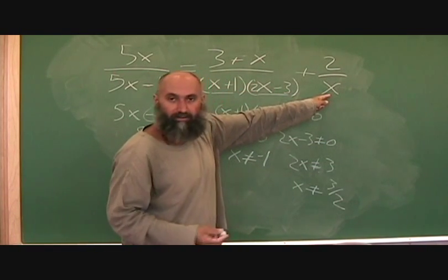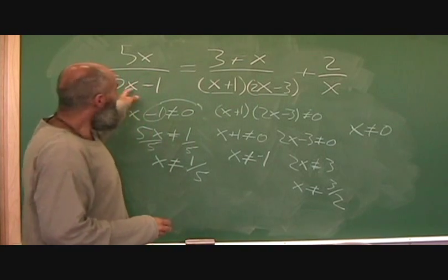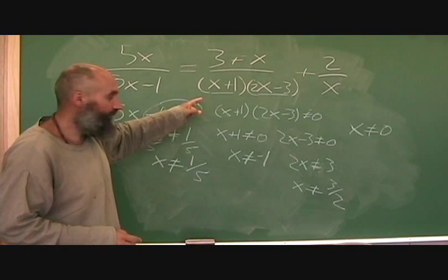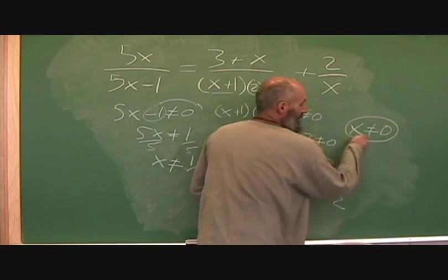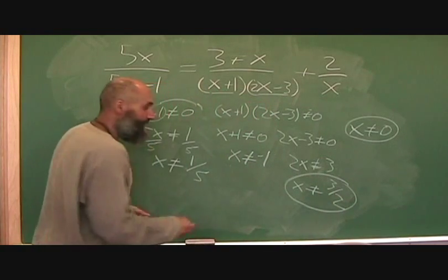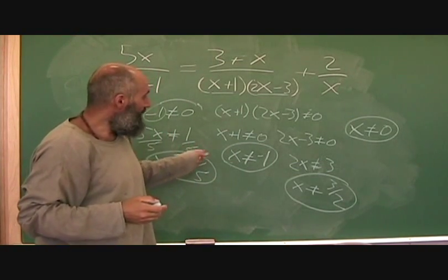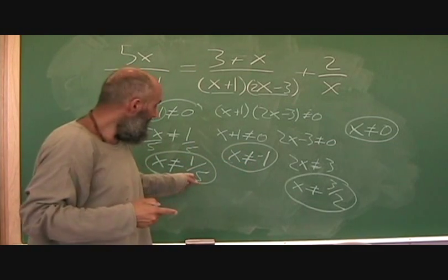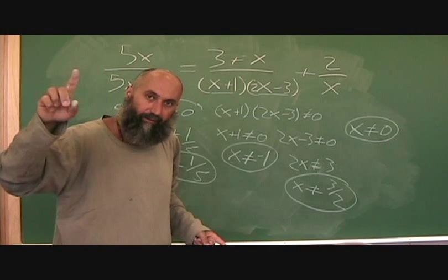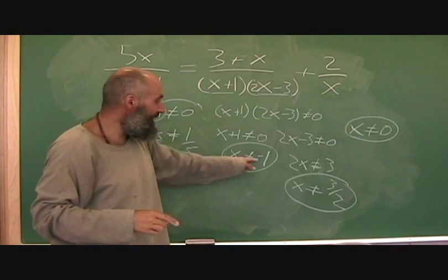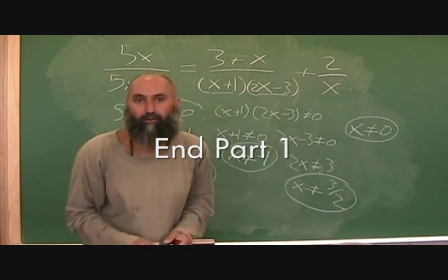And over here it's just straightforward: x cannot equal zero. So before you even start solving this equation, write down all the restrictions on the right-hand side. All your restrictions are: x cannot equal zero, x cannot equal 3 over 2, x cannot equal negative 1, and x cannot equal 1 over 5. And jumping ahead a little bit — for anyone who's gone far enough — these are going to be our vertical asymptotes if we're graphing the function. These are unknowns because if we set x equal to any single one of these in the above equation, we're going to have to divide by zero, and we don't know how to divide by zero.